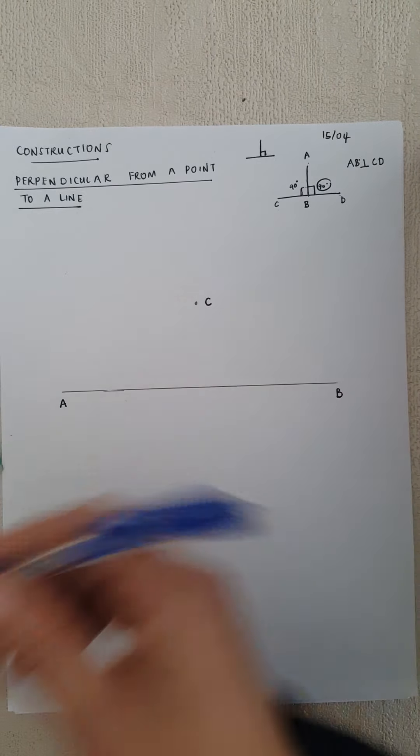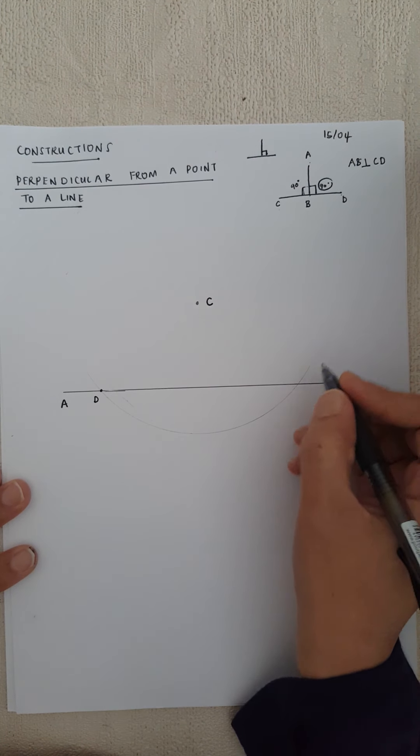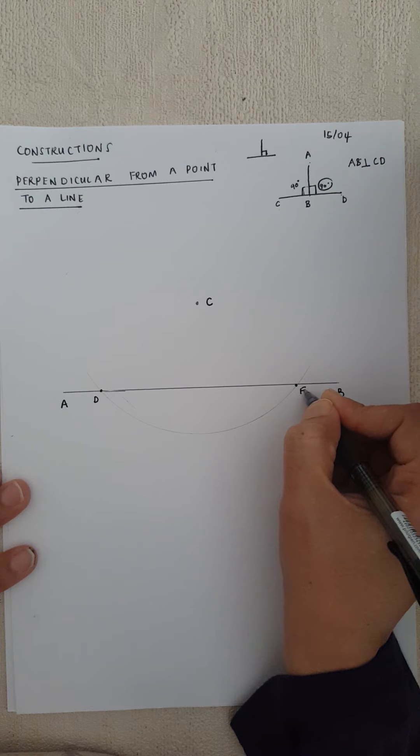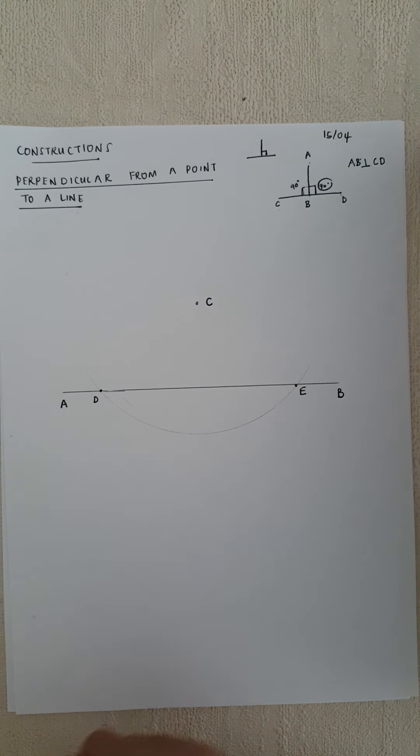Once your compass is tight, put the point of the compass on to C and just draw a simple arc. We're drawing an arc — you take your pencil and draw an arc. Now I need to name the arc. This point where the arc cuts the line AB, I'm calling it D, and this point here I'm calling it E.